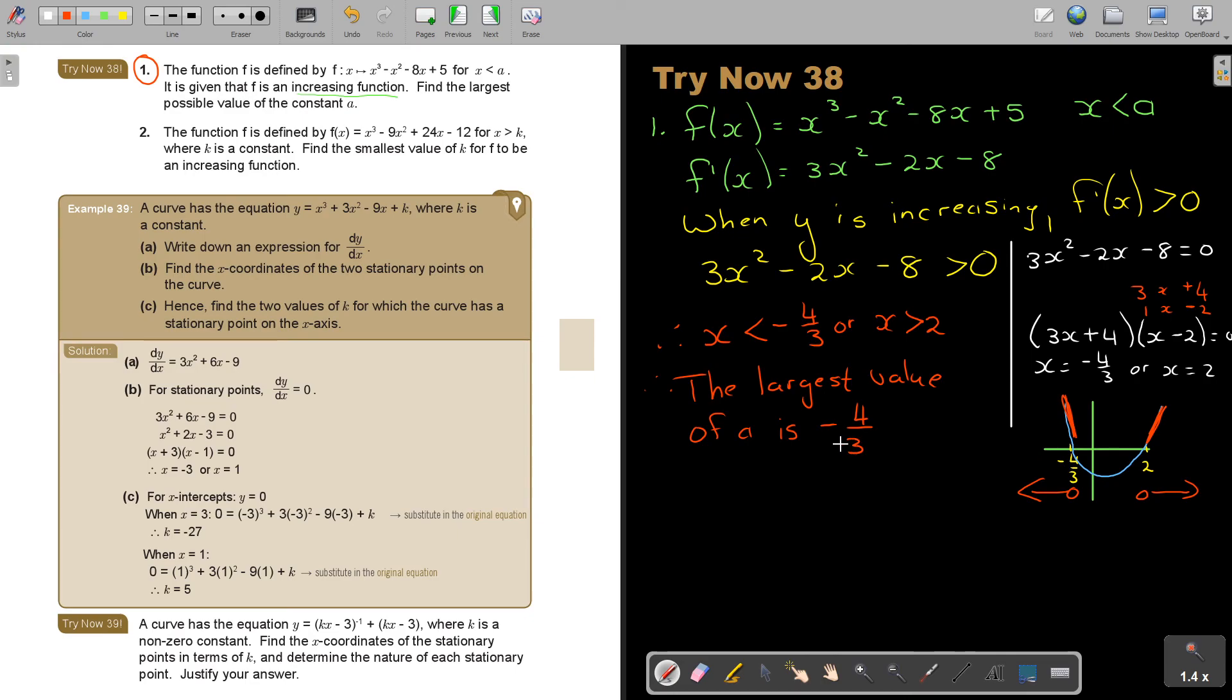the largest value of a is negative 4 over 3. And that will be my final. Find the largest possible value of the constant a. So it's negative 4 over 3. So a is smaller than you see a. And that a will be negative 4 over 3.